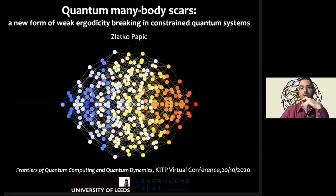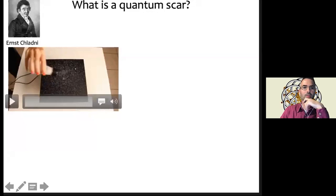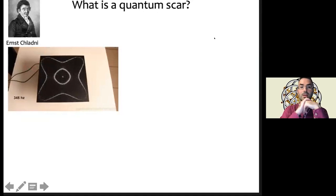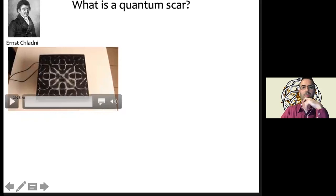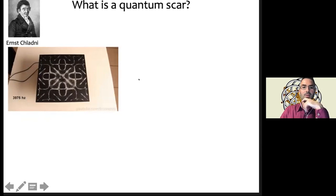The beginnings of this phenomenon can be traced to old experiments in acoustics done by Chladni in the beginning of the 19th century, where he took a rectangular plate, sprinkled some sand on top of it, and the plate was vibrating at some frequency. There are various beautiful shapes that form on this plate as it vibrates. This was the beginnings of modern acoustics.